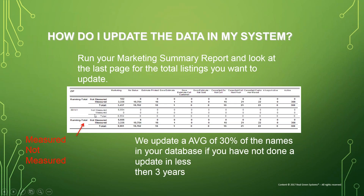As you move through the Marketing Summary Report, you've got your zip code, marketing data, measured and not measured — so if you only want to update the measured listings, you can. You've got your no-status records, estimates, printed estimates, given estimates, call-customer estimates, not sold, cancel, do-not-call, cancel-call-next-year, cancel-moved, always active, and your active statuses. Your Marketing Summary Report gives you all the information you need to see what you have available and what really needs to be updated.